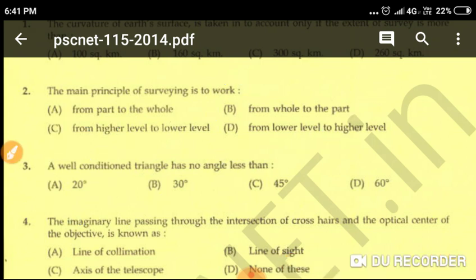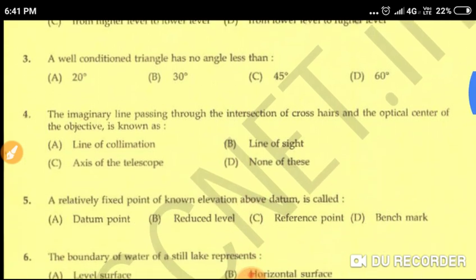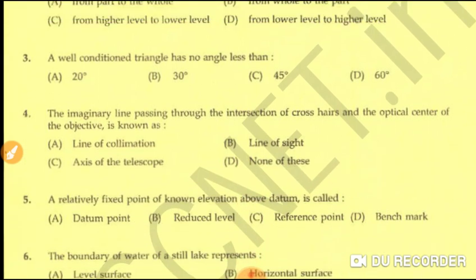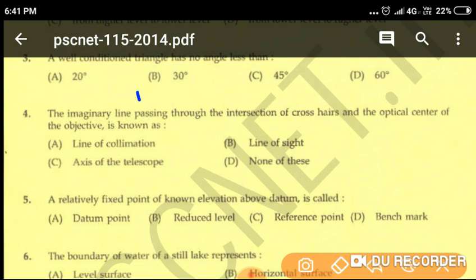Question number three: a well-conditioned triangle has no angle less than — option A: 20 degrees, option B: 30 degrees, option C: 45 degrees, option D: 60 degrees. A well-conditioned triangle has no angle less than 30 degrees and not more than 120 degrees. Option B, 30 degrees, is the correct answer.